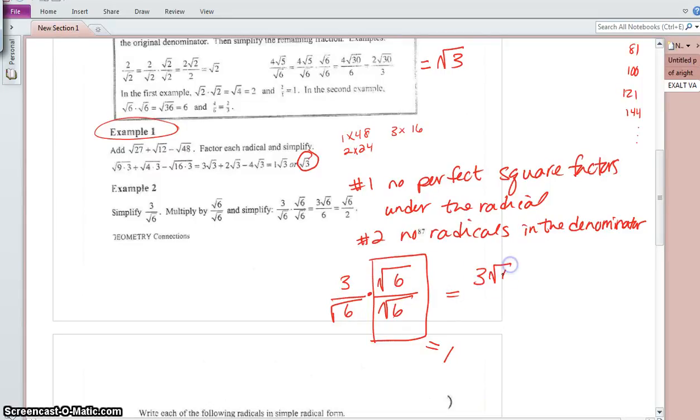So 3 square root of 6 over square root of 36 is the same as 3 square root of 6 over 6, which is the same as square root of 6 over what's 3 sixths? 1 half. So one another radical 6 over 2.